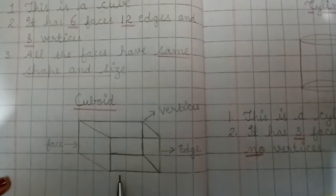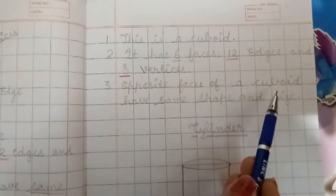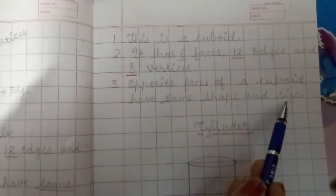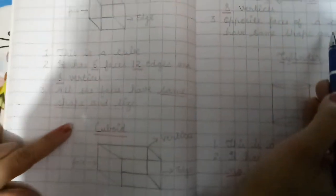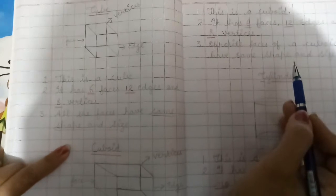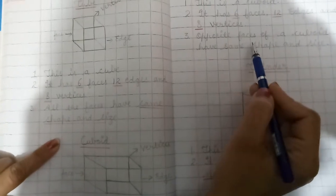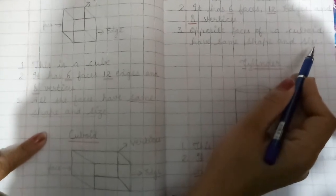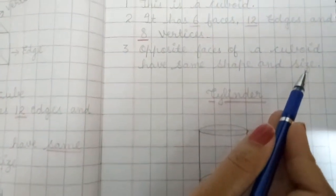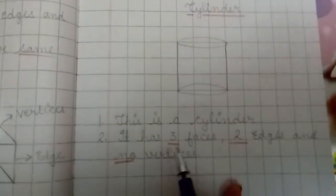Another shape is cuboid. A cuboid also has 6 faces, 12 edges, and 8 vertices. The difference between cube and cuboid is: in a cube, all faces have the same shape and same size, but in a cuboid, only the opposite faces have the same shape and same size. I hope this is clear.